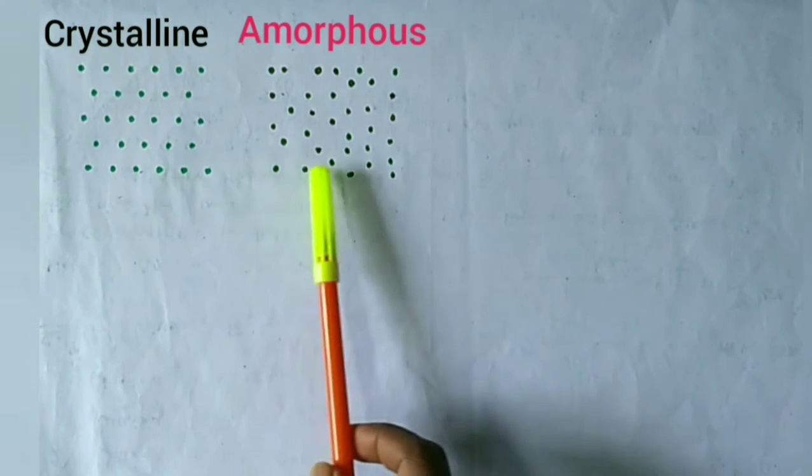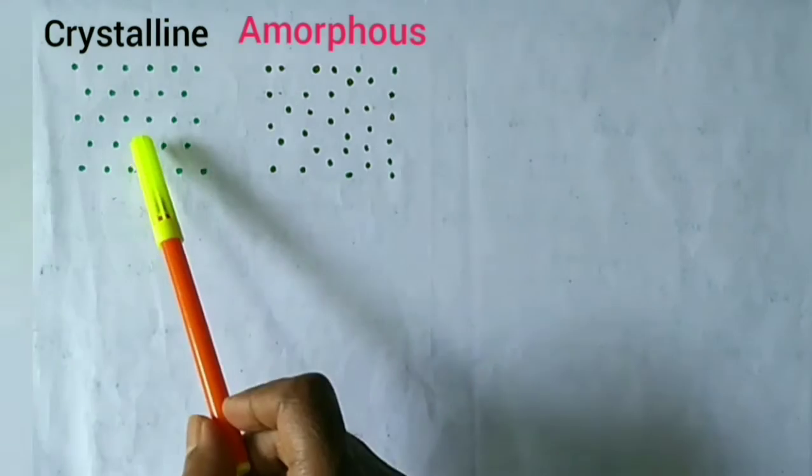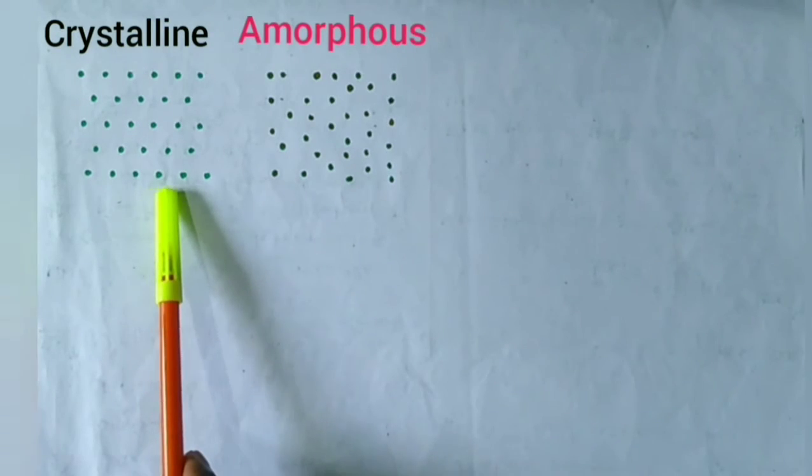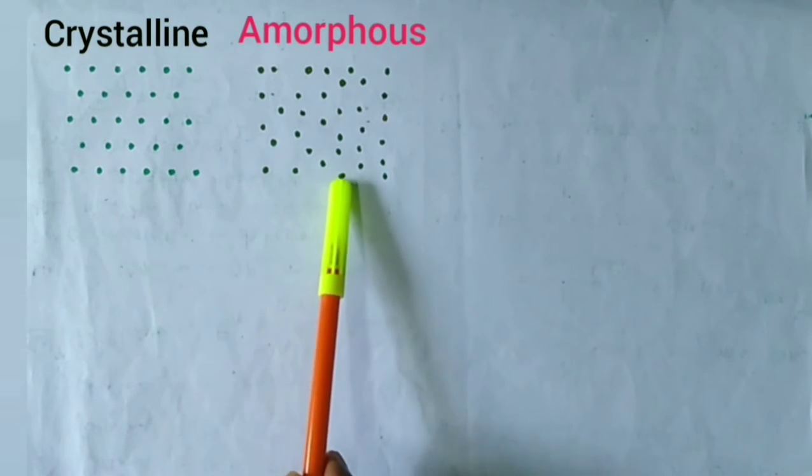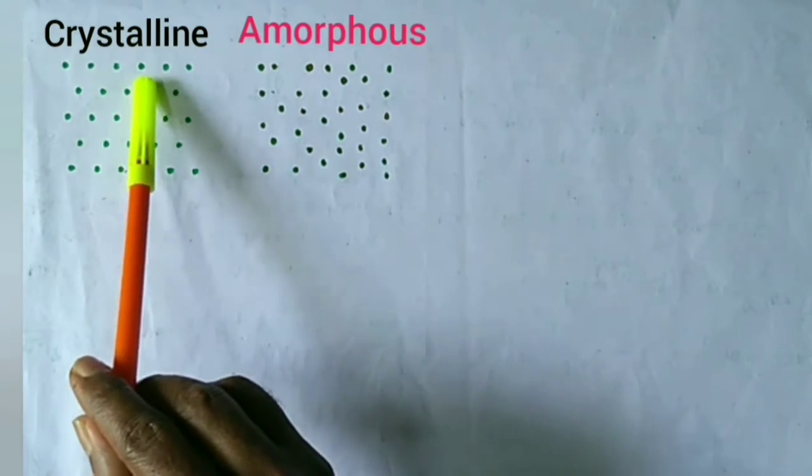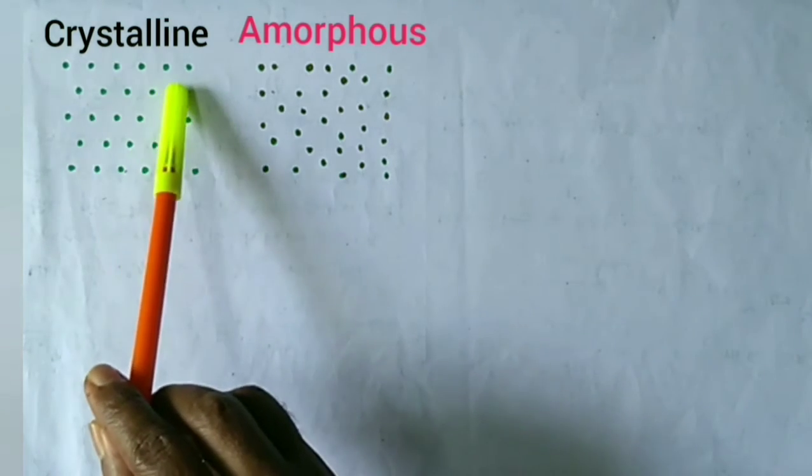Look at the figures. Each figure represents the two-dimensional solid. The dots of the figures represent the atom, molecules, or group of atoms. In this figure, the atoms or molecules or group of atoms are arranged in a regular manner.